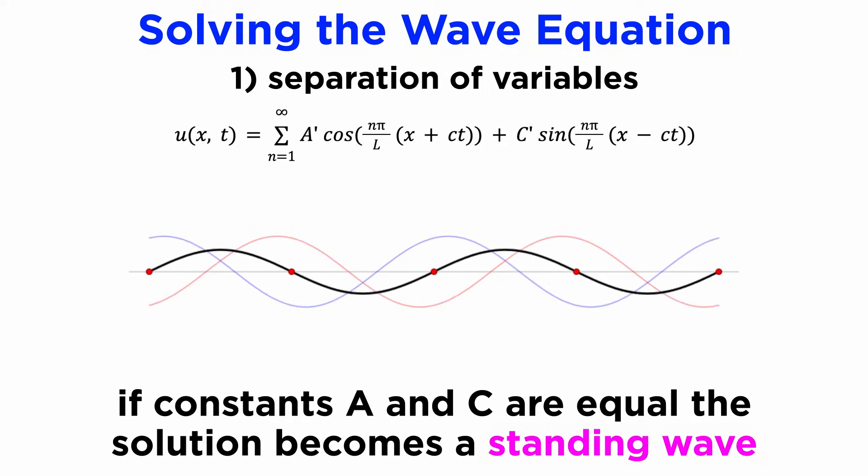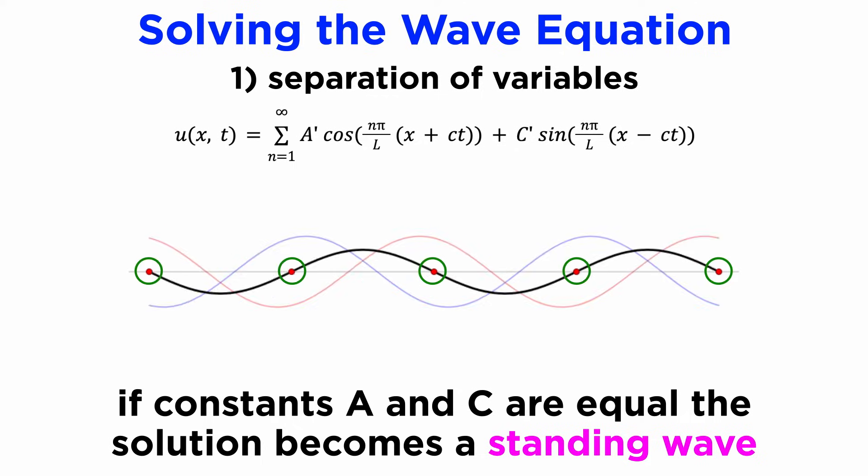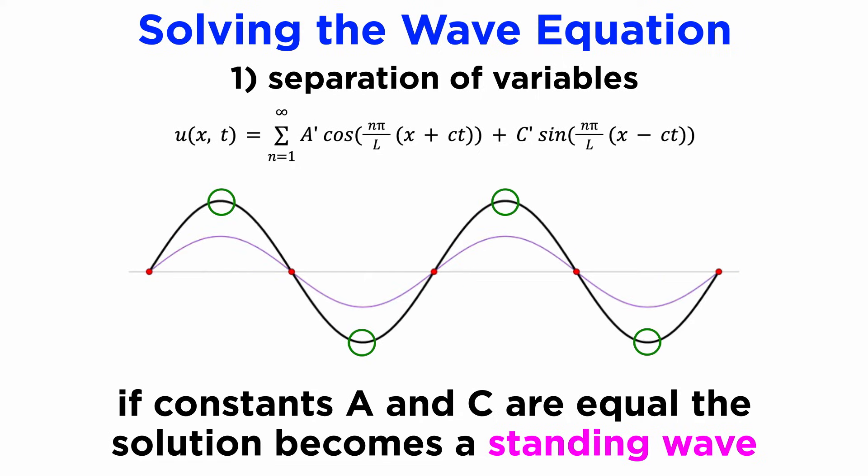We should also note that if the conditions are such that we find the constants a and c to be equal, our solution becomes a standing wave, which does not propagate through space at all, instead oscillating with fixed nodes, or places with zero amplitude, and antinodes, or places with maximum amplitude.